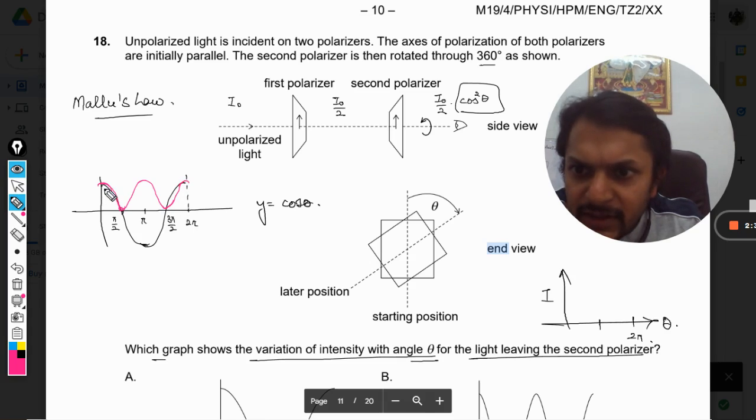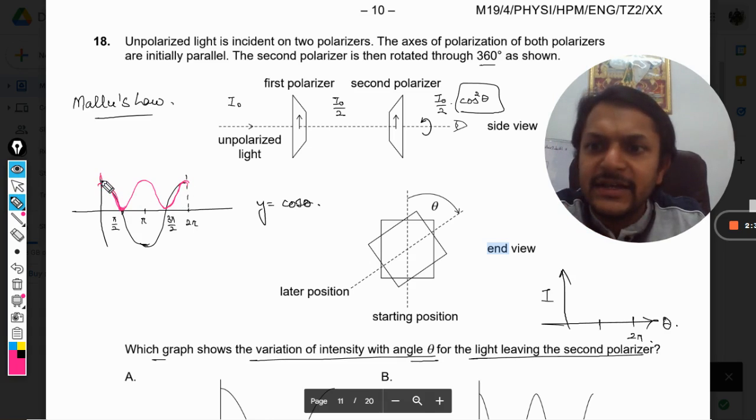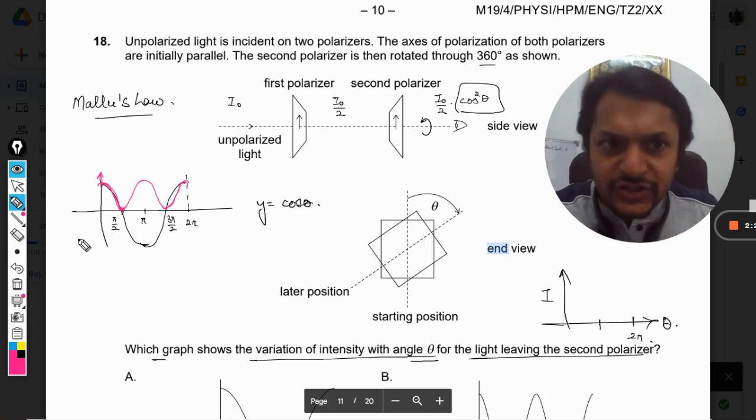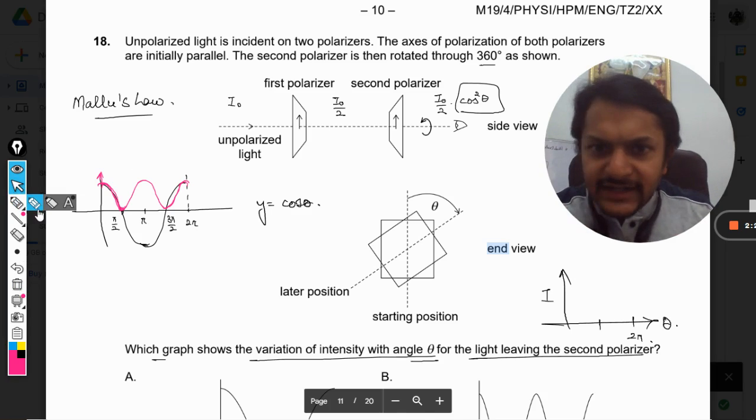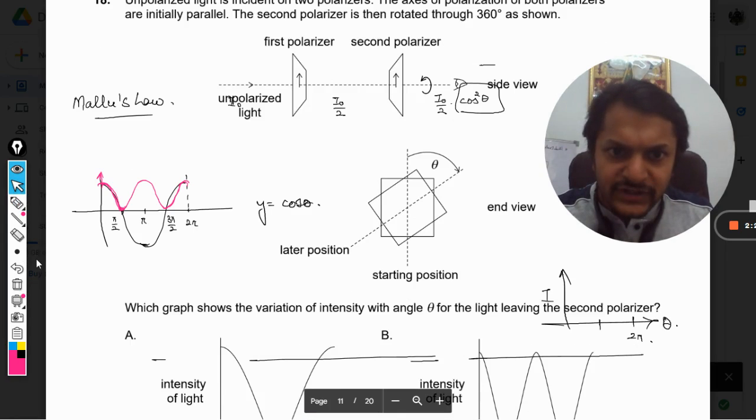The graph will become somewhat like this. So the graph shown in pink is cosine squared, and let us see which option is the correct answer.